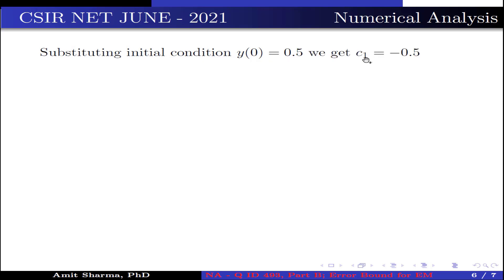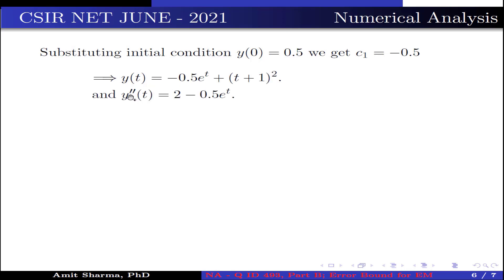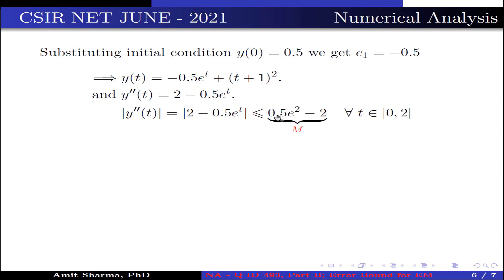This implies the solution is y(t) = −0.5eᵗ + (t + 1)², and y''(t) = 2 − 0.5eᵗ. Now we find the value of M. We have |y''(t)| = |2 − 0.5eᵗ| ≤ 0.5e² − 2 for all t ∈ [0, 2]. This is the value of M.